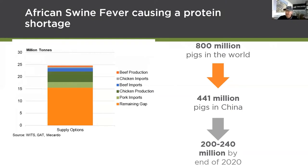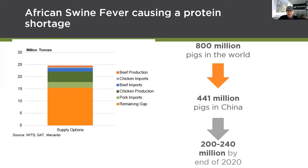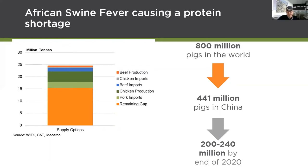When you account for China increasing their beef production, chicken imports, and beef imports, the remaining gap is about 16 million tons of red meat protein shortfall. Going back to 2018 before this kicked in, they've got 16 million tons less of red meat protein in their production system. To put that in perspective, if we shipped the whole beef slaughter from Australia there, we'd have to ship it seven times over to cover that shortfall.